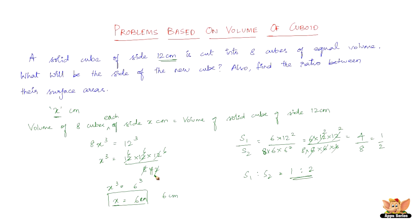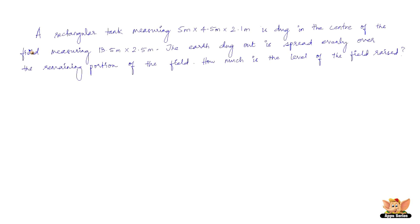Let us solve another problem. A rectangular tank measuring 5 m × 4.5 m × 2.1 m is dug out in the center of a field measuring 13.5 m × 2.5 m. The earth dug out is spread evenly over the remaining portion of the field. How much is the level of the field raised? We have the measurements of the field given, that is 13.5 m × 2.5 m, so we can find the area of this field.